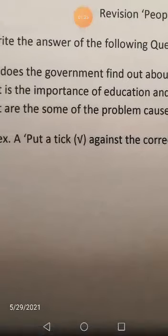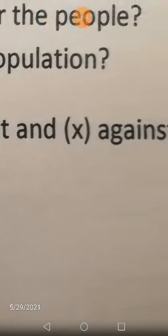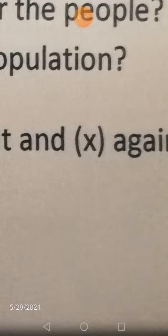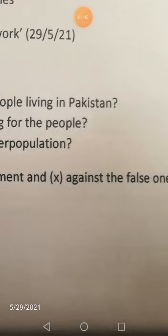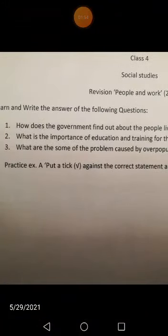You have to put a tick mark on the statement that you think is correct, and put a cross on the one you think is wrong. Do you have the exercise? This is what you have to do — the exercise is in your copy as well. You have to do it. It is also in your book. The question answers for 'How does the government find out?' are in your copy. I am going to read them for you.